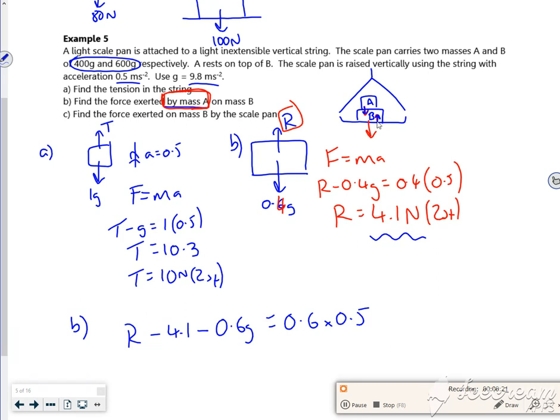...you've got the 4.1 that's pushing down from A, and then you've got this one here that's pushing down from B, and that's equal to 0.6, that's 0.5 from just looking at the mass B.